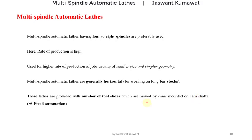Multi spindle automatic lathes have a higher capital cost, and the setup of this machine is very tedious and requires a long time. The machining accuracy is somewhat lower than that of single spindle automatic lathes. However, the higher productivity and greater variety of work that can be produced on these machines make the use of multi spindle automatic lathes very popular.